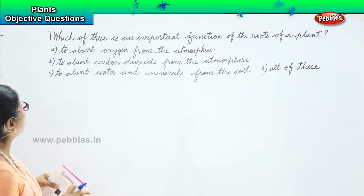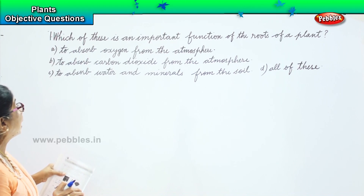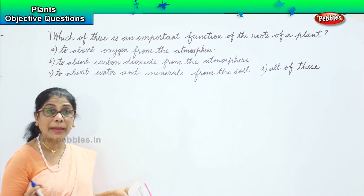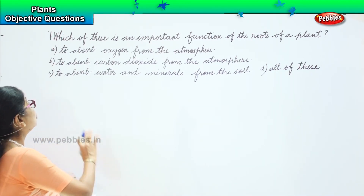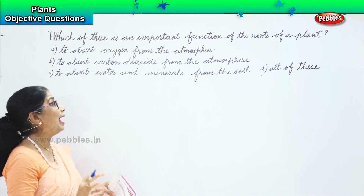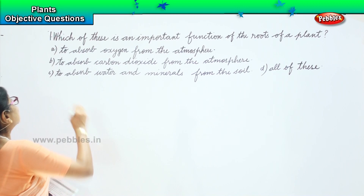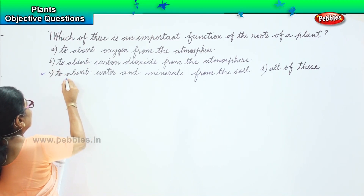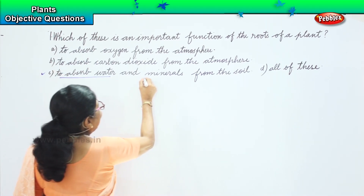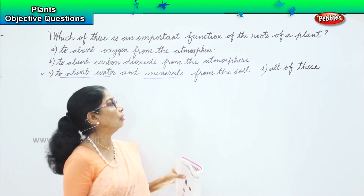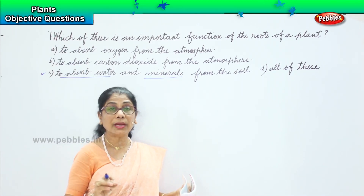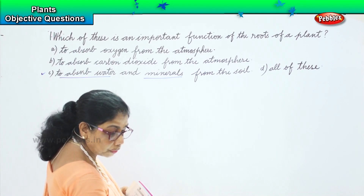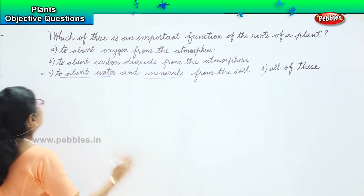Does it absorb oxygen from the atmosphere? No. To absorb carbon dioxide from the atmosphere? No. To absorb water and minerals from the soil? Correct! So the important function of roots of the plant is to absorb water and minerals from the soil. Option D — all of this — is wrong. The answer is option C.